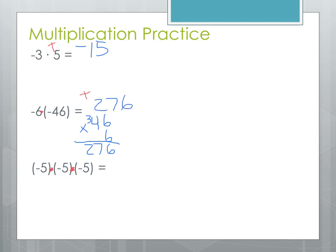Our third example has three numbers multiplied together. Just like adding and subtracting multiple numbers, we work from left to right. We start with negative 5 times negative 5 — the signs are the same, so that's positive 25. Then we bring down the other negative 5. Positive times negative gives different signs, so the answer is negative, and 25 times 5 is 125. So the result is negative 125.